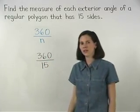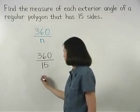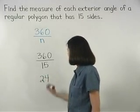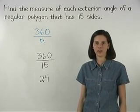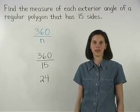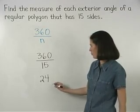And 360 divided by 15 is 24. So the measure of each exterior angle of a regular polygon that has 15 sides is 24 degrees.